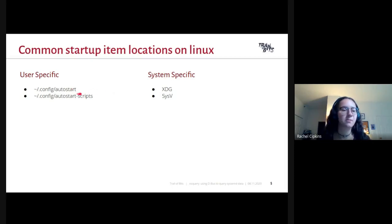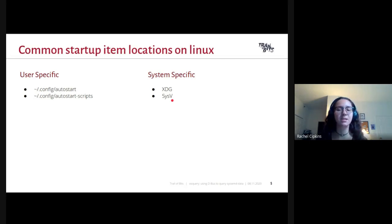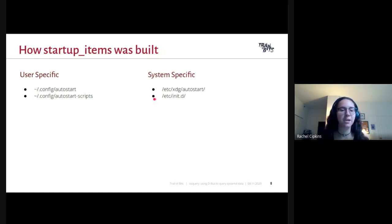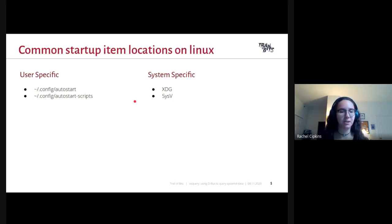The startup items table incorporates both types and designates between them. For user-specific, we have auto start and auto start scripts. For system-specific, we have XDG and System V. Config auto start and XDG both contain desktop entries, and System V and auto start scripts both contain scripts that are run at startup. Building the startup items table was fairly straightforward — it really just involved parsing files from each of these locations and properly adding the data to the table.